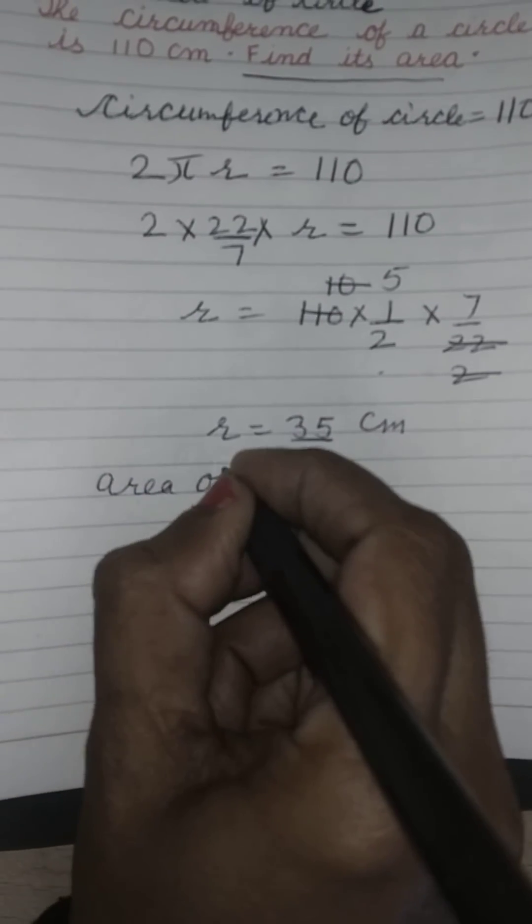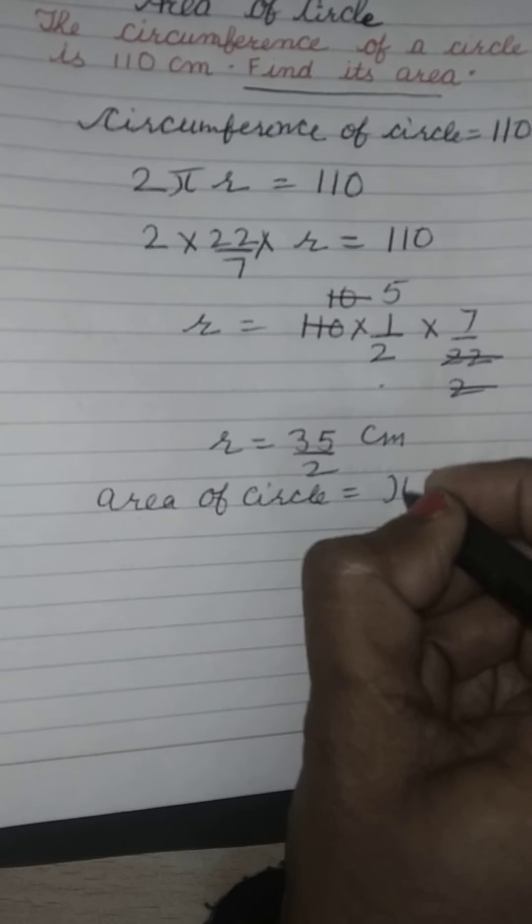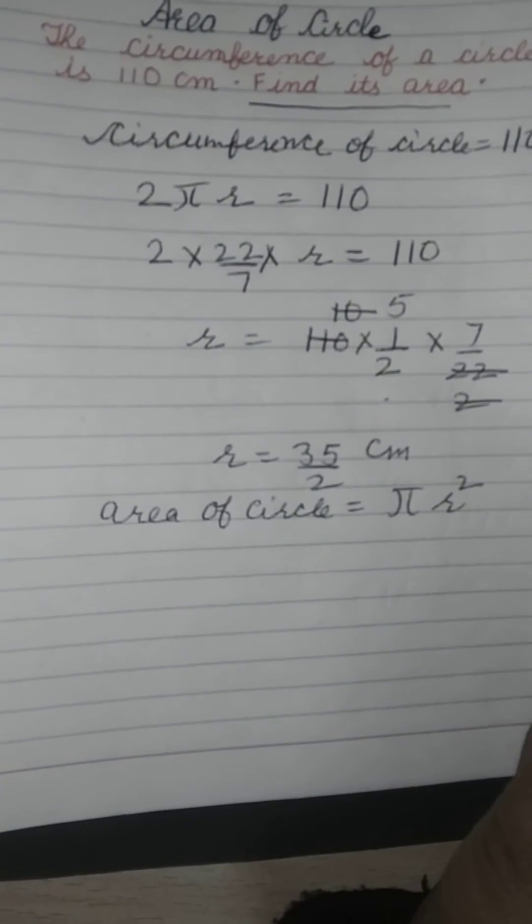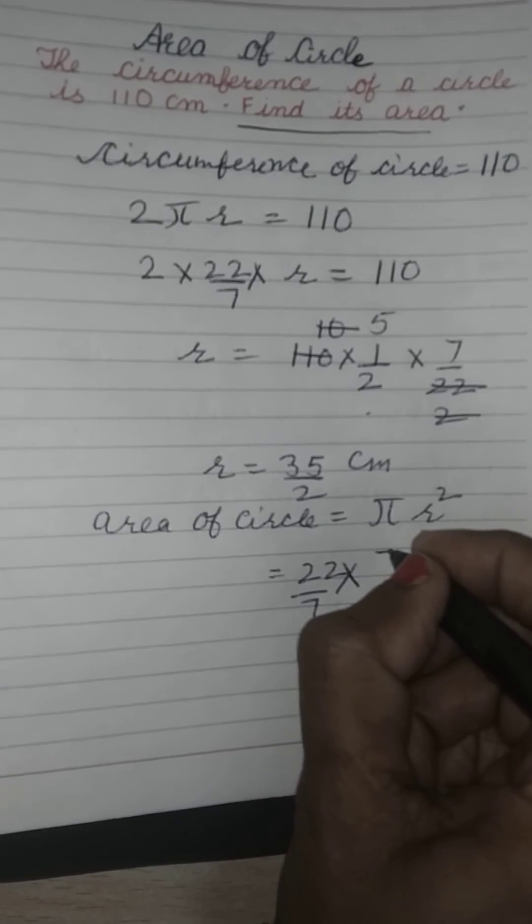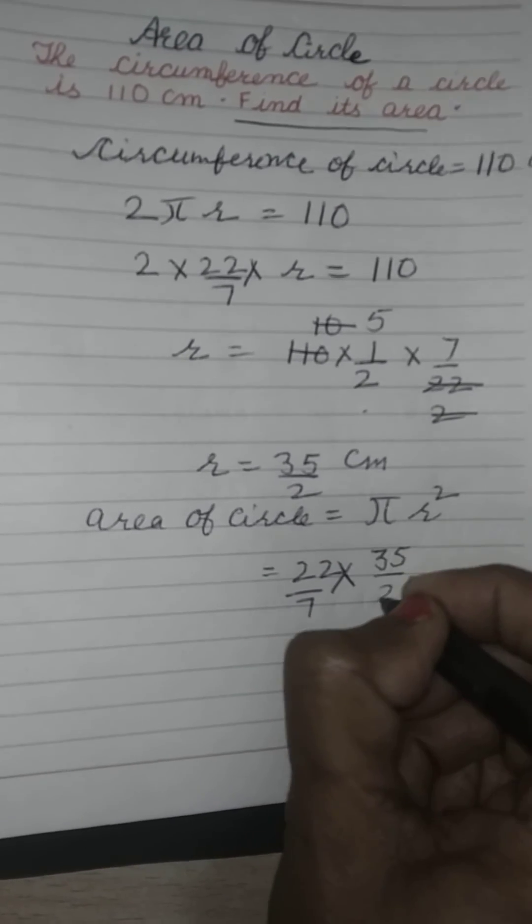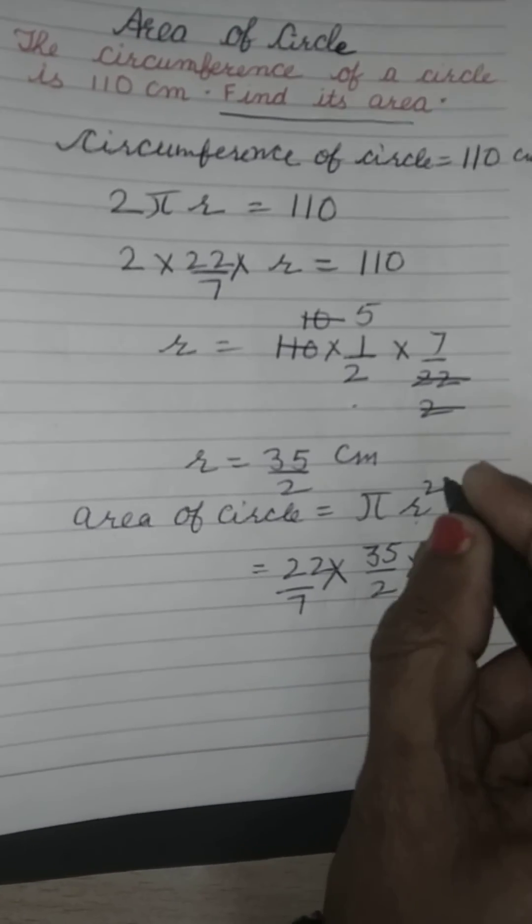For the area of the circle, the formula is πr². Pi is 22/7, radius is 35/2, so we have 22/7 times (35/2)².